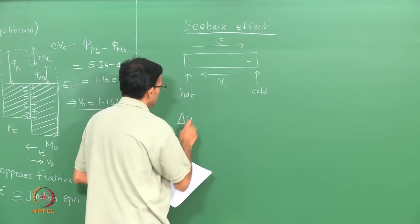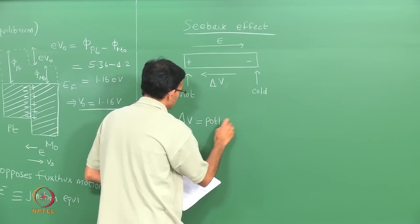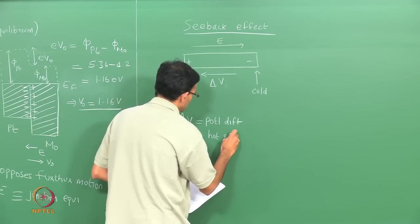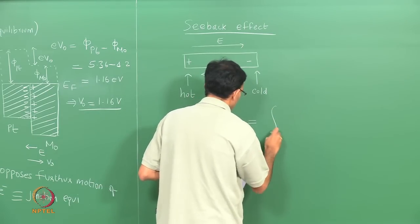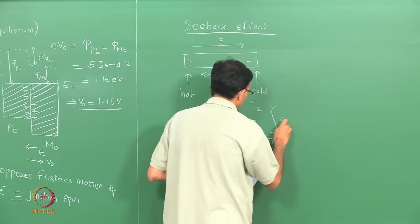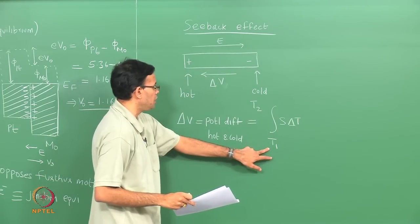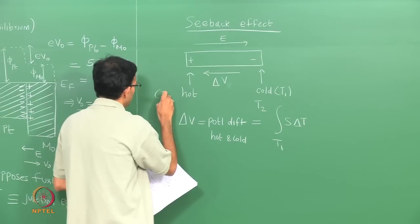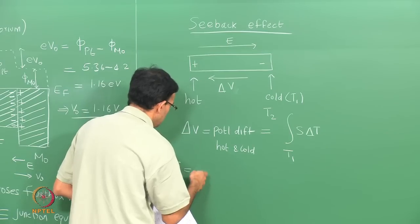These electrons will tend to drift towards the cold end, creating a net positive charge on the hot side and a net negative charge on the cold side. This sets up an electric field and a potential V through the metal. This potential depends on the temperature difference between the hot and cold ends and the Seebeck coefficient S, so delta V equals the integral of S dT from T1 (cold end) to T2 (hot end).